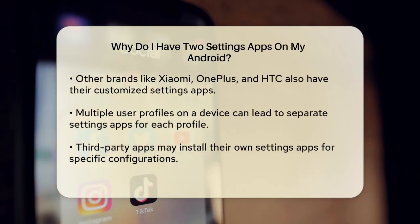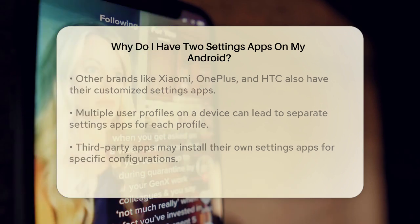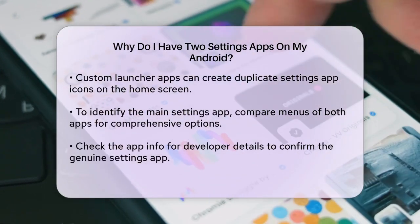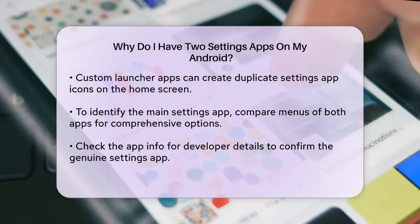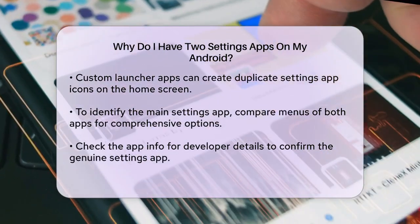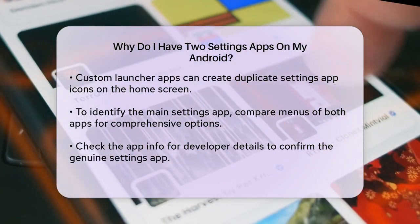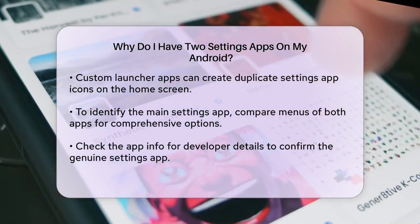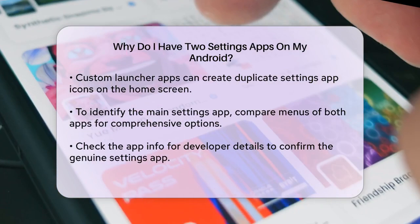If you are using a custom launcher app to personalize your home screen, it might display a separate icon for the Settings App alongside the default one. This can happen due to accidental duplication or the launcher's settings.